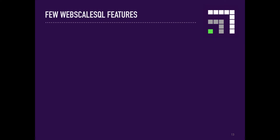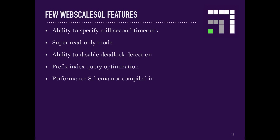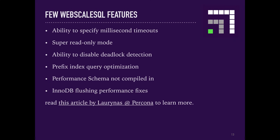Here are just a few things that are different on WebScale SQL — things that other variants don't have and may not even plan to have. Ability to specify millisecond timeouts for various network operations. Super read-only mode. Ability to disable deadlock detection — not something you want on a typical transactional database. Prefix index query optimization. Absence of performance schema by default, as performance schema may have a noticeable overhead even when not enabled. InnoDB flushing performance fixes, most of which are also available in Percona server, MariaDB, and now MySQL 5.7.